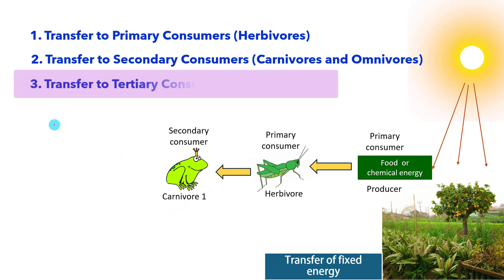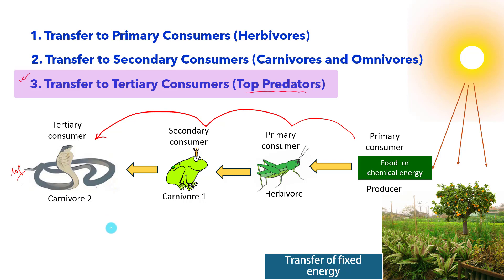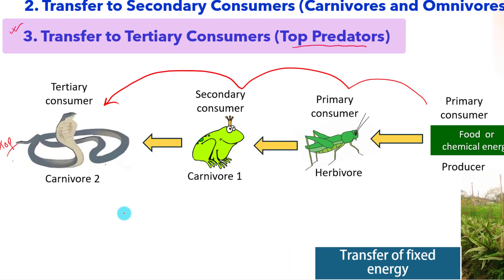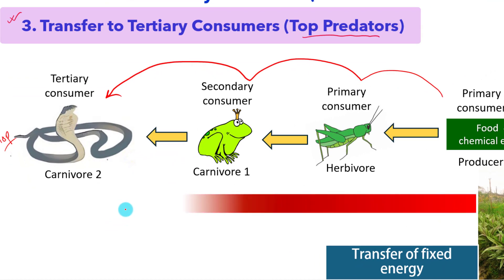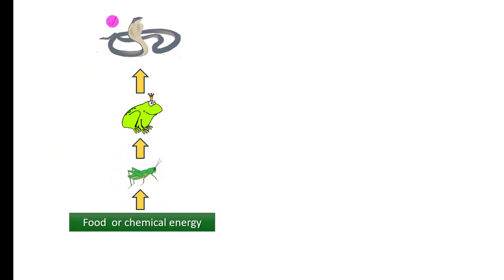Transfer of energy to tertiary consumers — top predators. The frog is eaten by the snake, so in this example the snake is the top predator. It takes energy from the frog or other carnivores, and the energy is transferred to the top of the food chain. This is how energy flows and reaches the top carnivore. Tertiary consumers, which are top predators, feed on other carnivores or omnivores and represent the highest trophic level in the food chain.